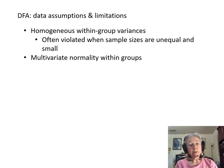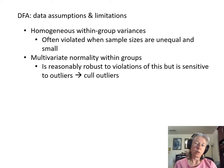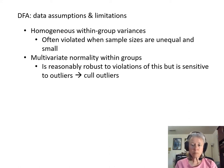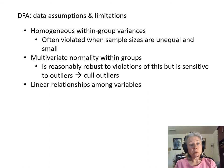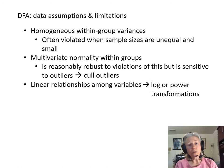DFA also assumes multivariate normality within your groups, but fortunately it's reasonably robust to violations of this, although it is particularly sensitive to outliers. You really ought to screen your data for outliers and cull any outliers first. It also assumes linear relationships among variables, but this is often violated with ecological community data, so you may need to perform a data transformation first — for example, a logarithmic or a power transformation.